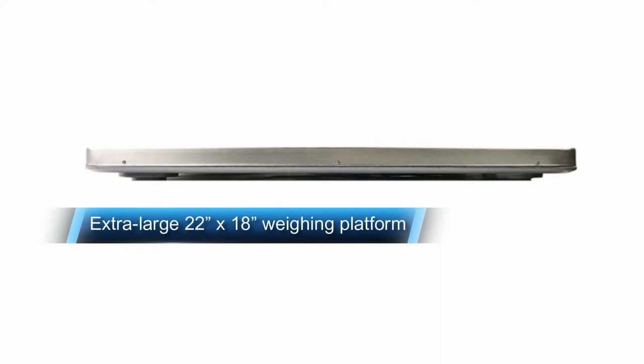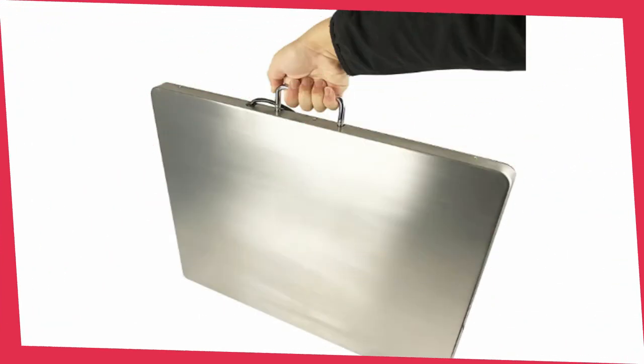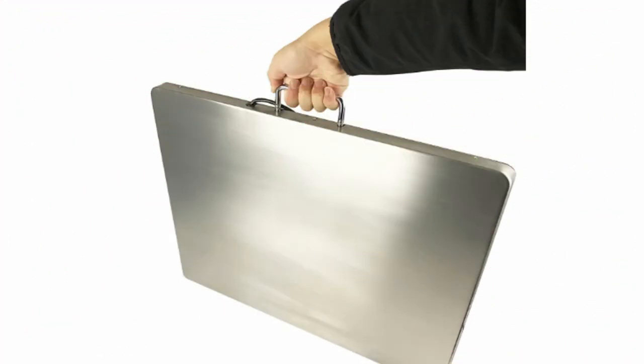This high-end industrial scale comes complete with a wired remote display for easy reading, multiple weighing modes, and accuracy of 0.1 lbs, so you can rest assured you'll be getting the most out of your money here. Be sure to also check out our reviews of the best paper shredders for more useful products for your workspace.